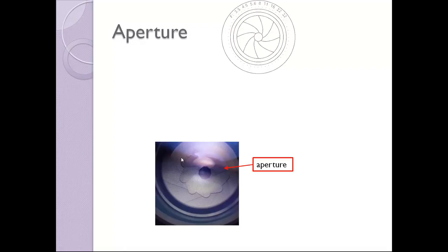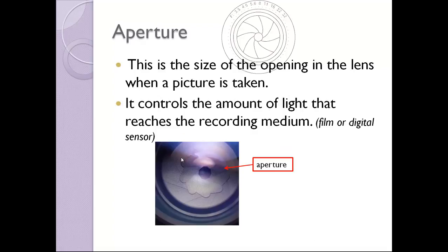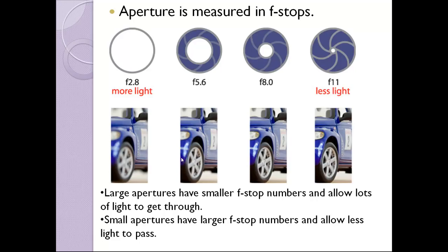Aperture. This is the size of the opening in the lens when a picture is taken. It controls the amount of light that reaches the recording medium. Aperture is measured in f-stops. Larger apertures have a smaller f-stop and allow lots of light to get through. Small apertures have a larger f-stop and allow less light to pass. For example, an f-stop of 2.8 allows more light to enter the lens than an f-stop of f11.